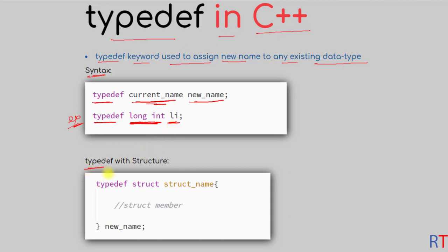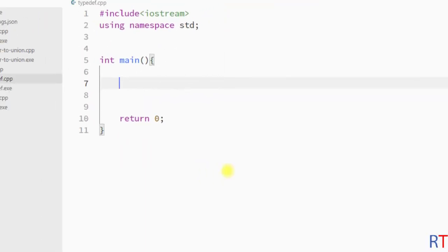We can also use typedef with a structure. The syntax is: first you have the typedef keyword, then the structure definition, and after the closing braces we assign one new name to the structure. By doing so, instead of using the full name of the structure we can use the new name throughout our program.